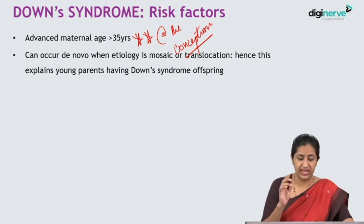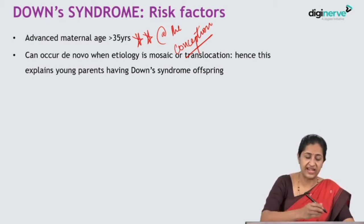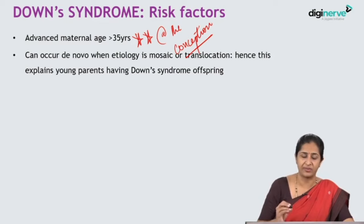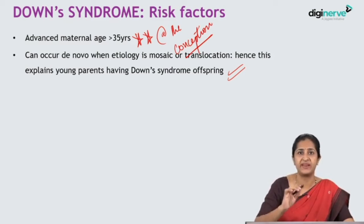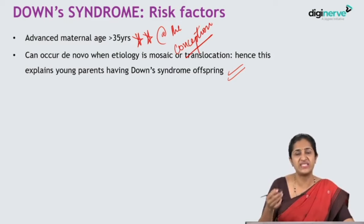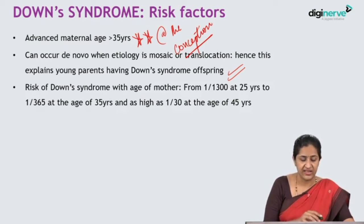Down syndrome can also occur de novo in younger parents when the etiology is mosaicism or translocation. So if you get a child who has Down syndrome and the parents are young — say the mother's age is only 22 — the answer is that when the etiology is either mosaicism or translocation, even young parents can have Down syndrome offspring. It is only trisomy 21 which is associated with advanced maternal age.